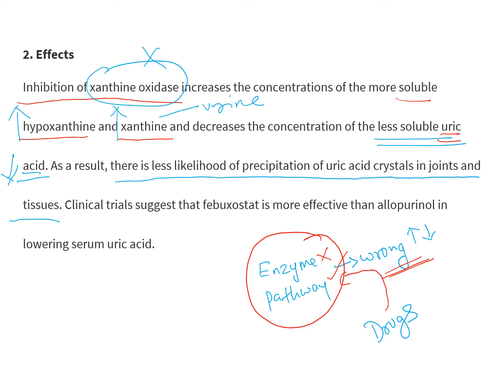Here our problem, or the root cause, is uric acid. Clinical trials suggest that febuxostat is more effective than allopurinol in lowering serum uric acid levels, so this would be your drug of choice when writing a prescription.